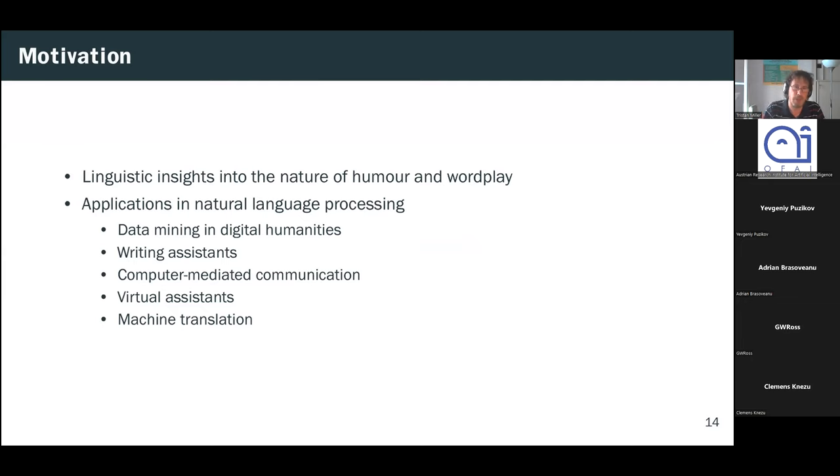And why would we actually want to do this? Well, there are basically upstream and downstream benefits to doing this upstream. We can use computational approaches to derive new linguistic insights into the nature of humor and the nature of wordplay. That is, we can use our computational tools to better understand what makes a pun funny or what are the permissible sound or meaning transformations between a pun and its target. Downstream, we might have applications in natural language processes, for example, data mining and the digital humanities. We might be able to build tools to help literary scholars study the humor or the wordplay of a certain author. Writing assistance, if we want to help somebody write a funny speech. Maybe you can make some suggestions on how to insert jokes, possibly involving puns, into the material.